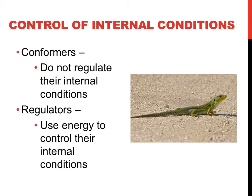Alternatively, organisms can expend energy to maintain homeostasis, or their internal conditions. Organisms that employ this type of strategy are called regulators. As with all adaptations organisms possess, there are trade-offs. Regulators can survive very cold conditions quite well, but require much more food to sustain their energy needs. Some animals that are conformers can go weeks or months without eating because of their lower energy requirements, but would not fare very well in the cold.